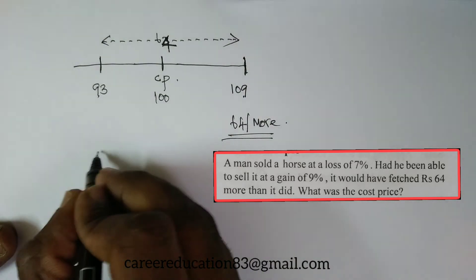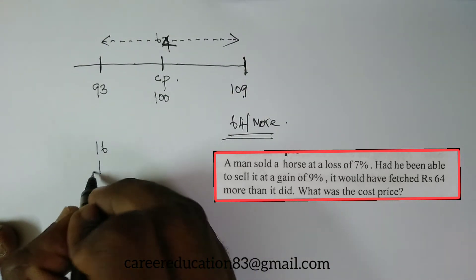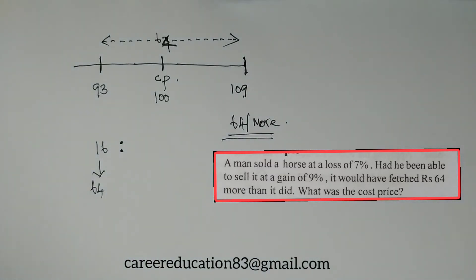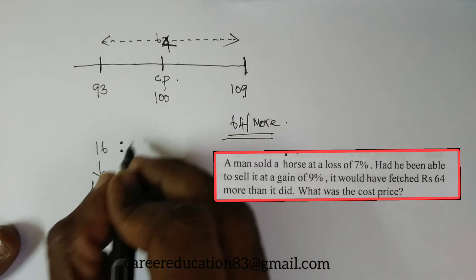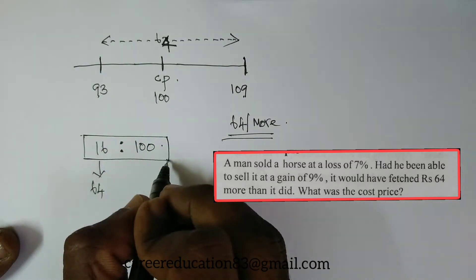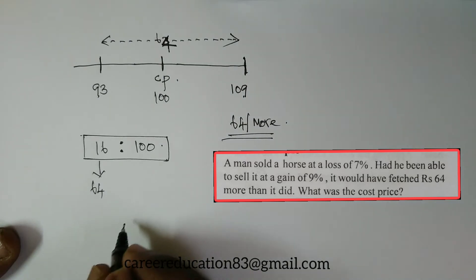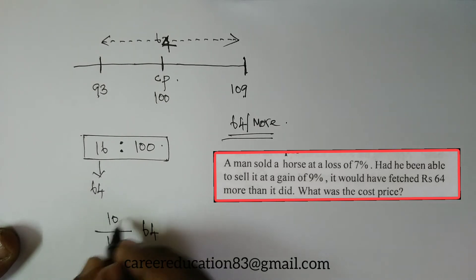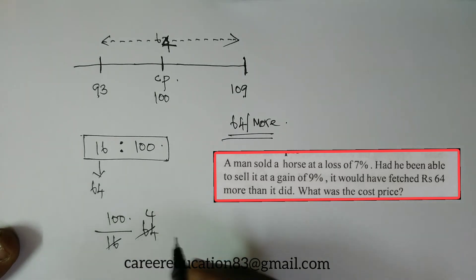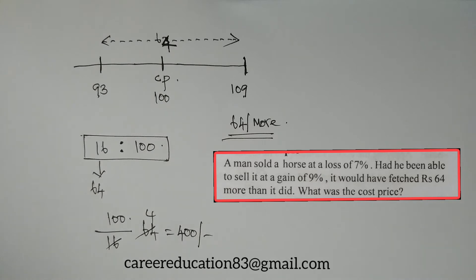So 64 rupees corresponds to 16% difference. We need to find the cost price, which is 100%. Using the ratio: 16% equals 64, so 100% equals 400. The cost price is 400 rupees. Yes, that is the book answer — answer is 400.